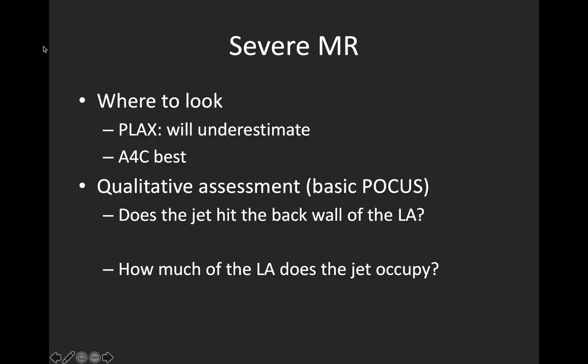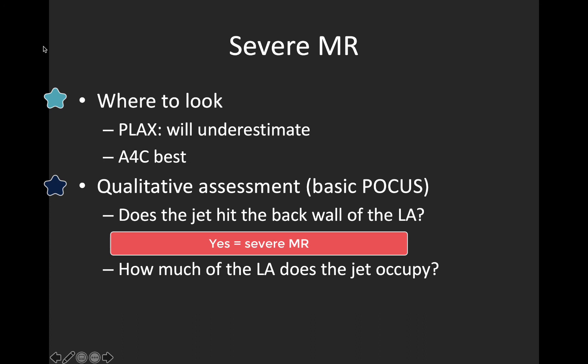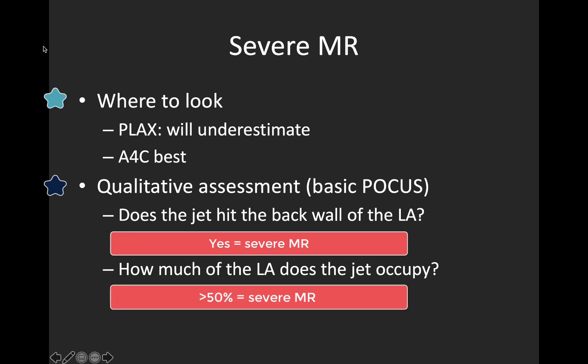We'll briefly talk about each severe regurgitant lesion. First, severe mitral regurgitation: to identify this we'll use a parasternal long axis or an apical four-chamber view, keeping in mind that a parasternal long axis view will tend to underestimate MR severity as the regurgitant jet isn't parallel to our line of interrogation. There are two questions to ask qualitatively: does the regurgitant jet hit the back wall of the left atrium? And does the regurgitant jet occupy more than 50% of the left atrium? If so in either case, the MR is considered severe.